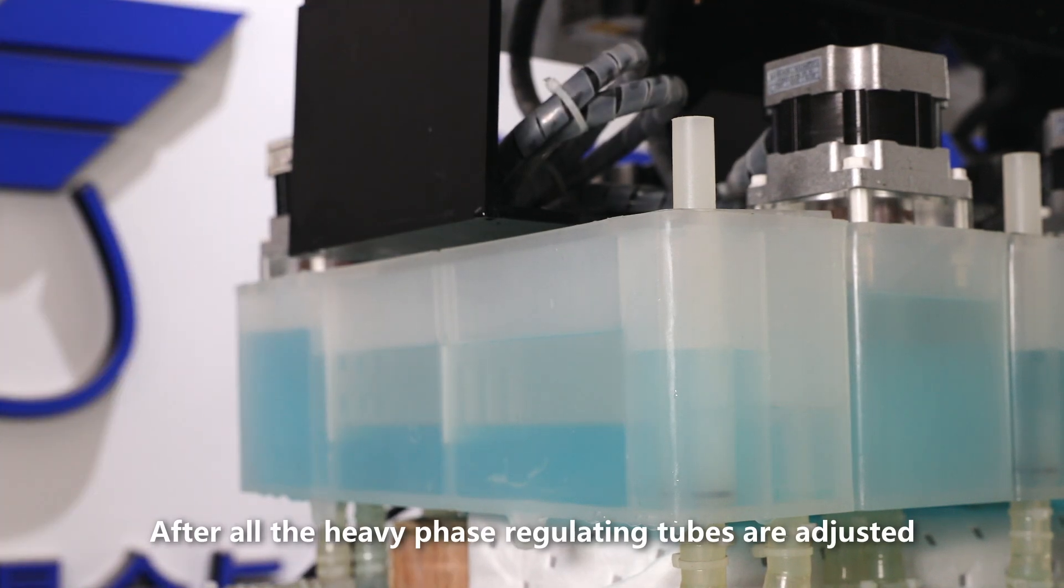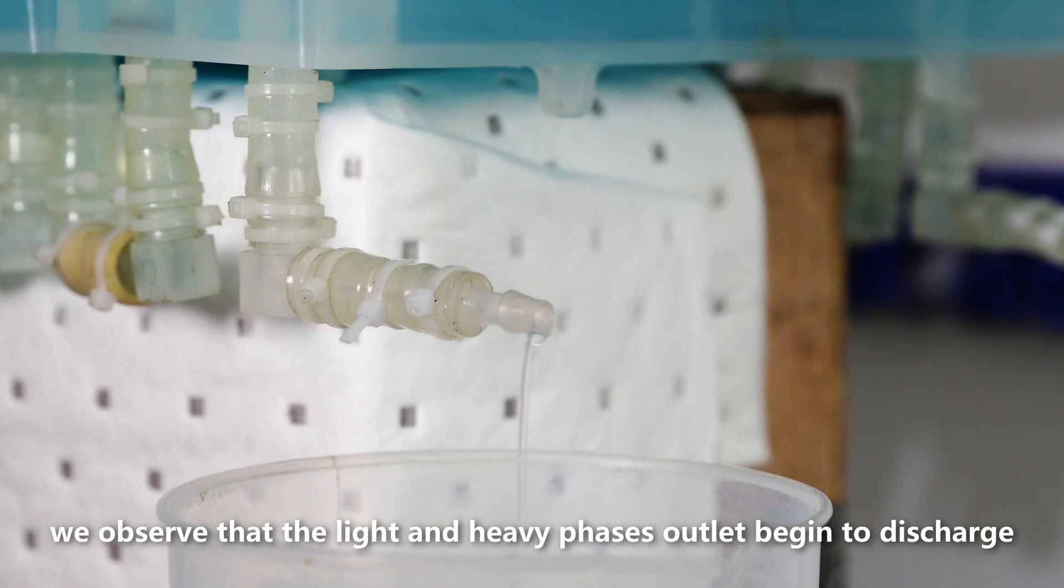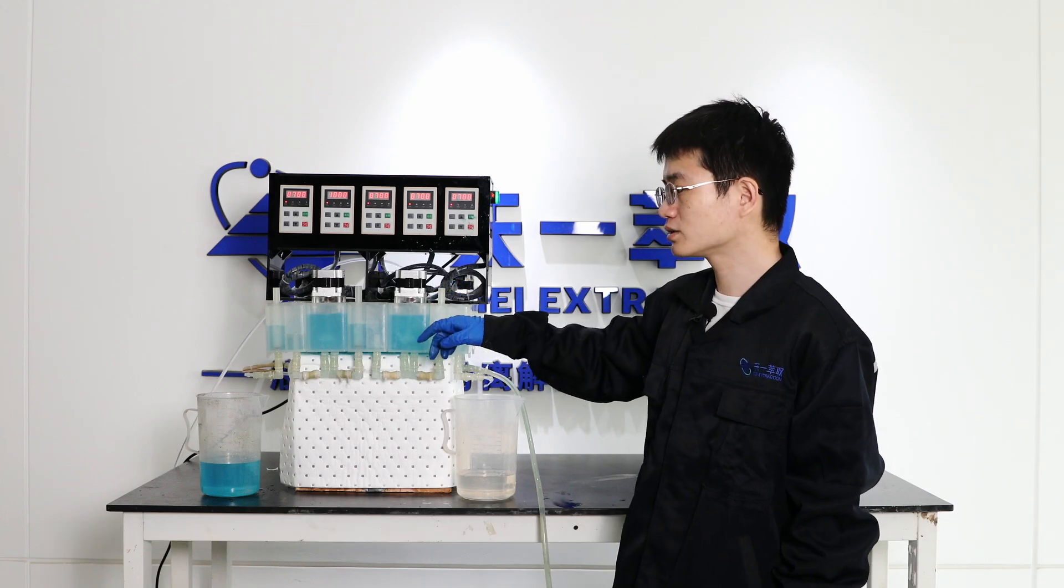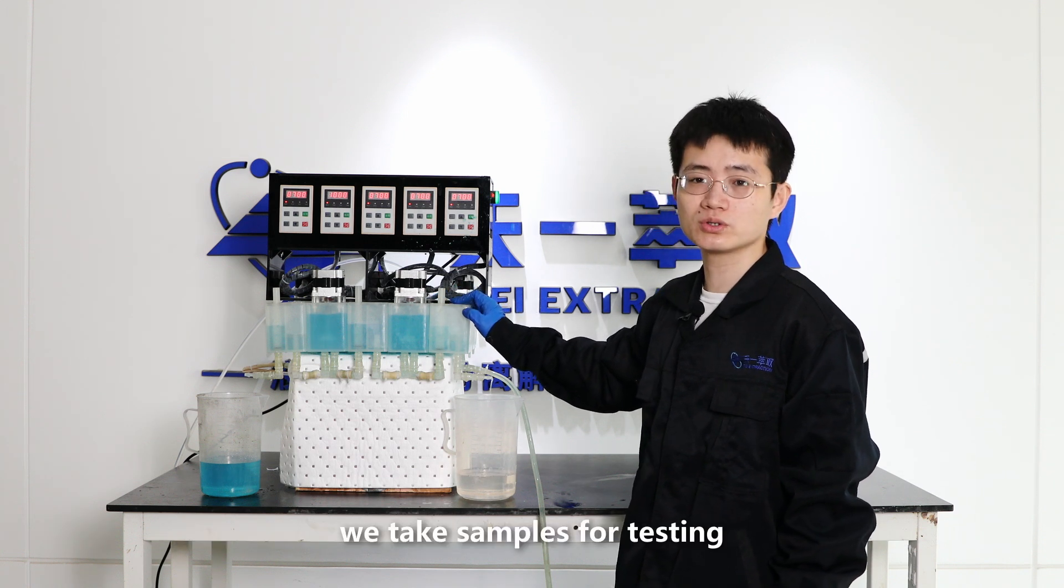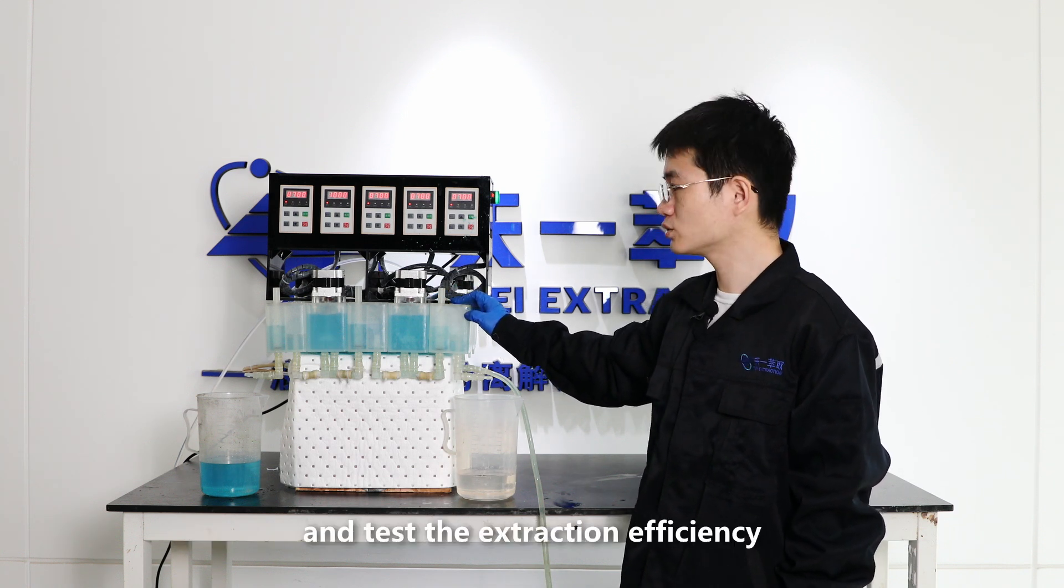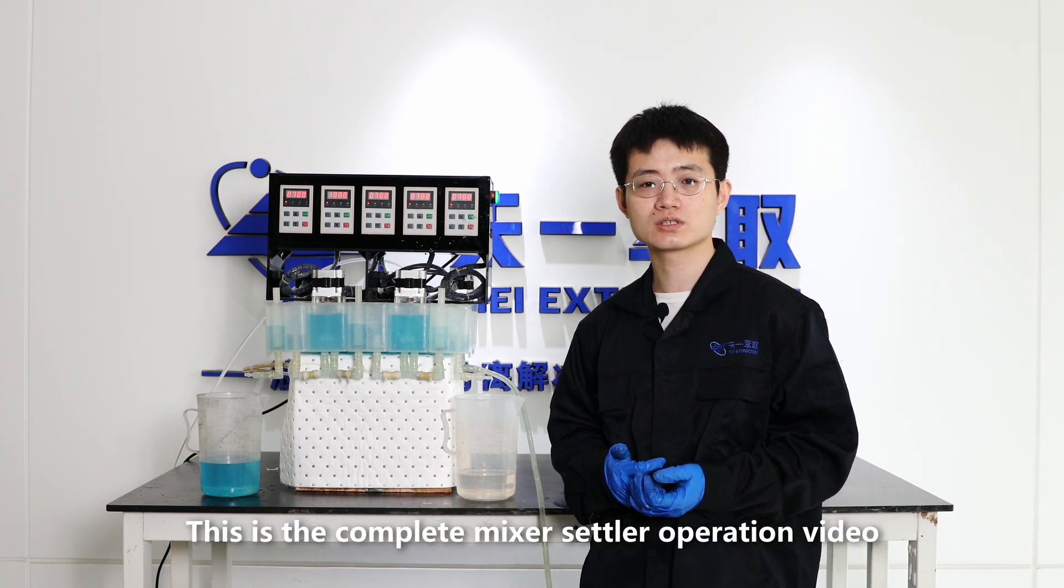After all the heavy phase regulating tubes are adjusted, we observe that the light and heavy phases outlet begin to discharge after the operation has stabilized for a period of time. We take samples for testing and test the extraction efficiency. This is the complete mixer settler operation video.